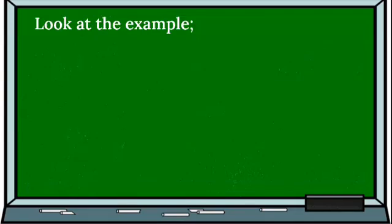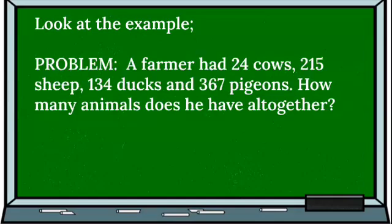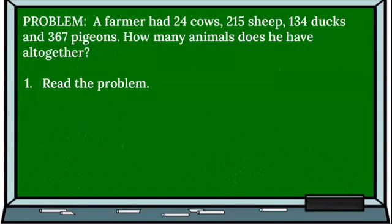Now let's look at an example using these steps. Here we have our problem: A farmer had 24 cows, 215 sheep, 134 ducks, and 367 pigeons. How many animals does he have altogether? So we have read our problem — that is our first step.